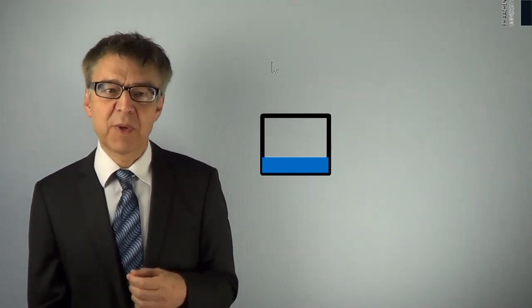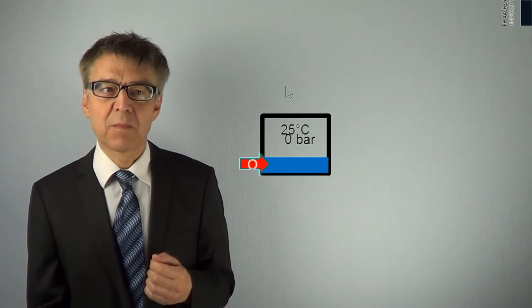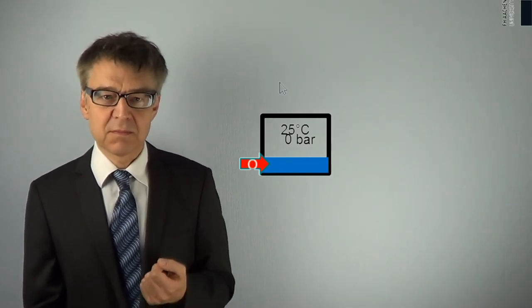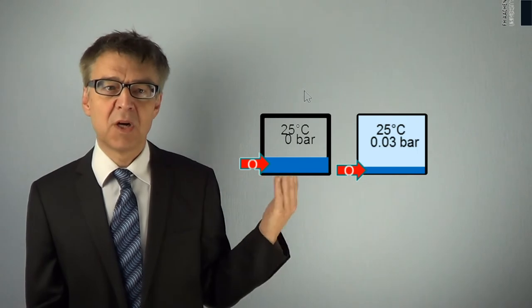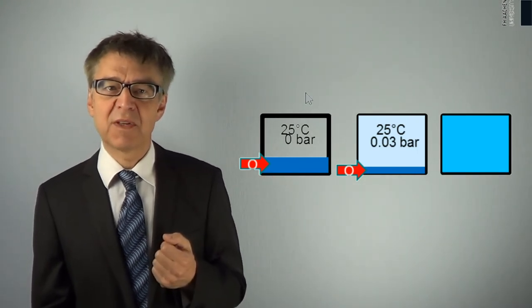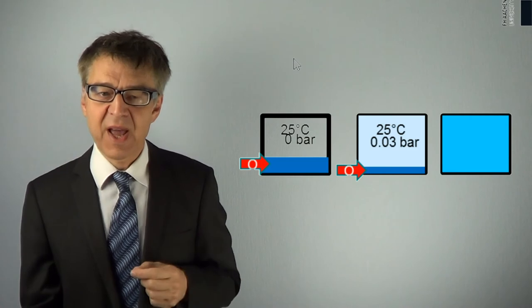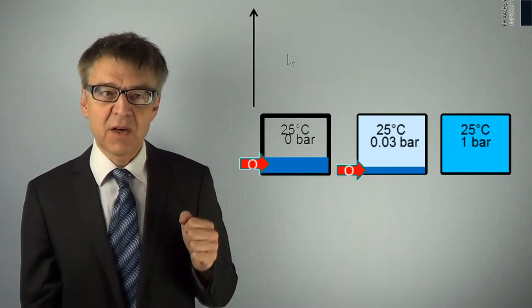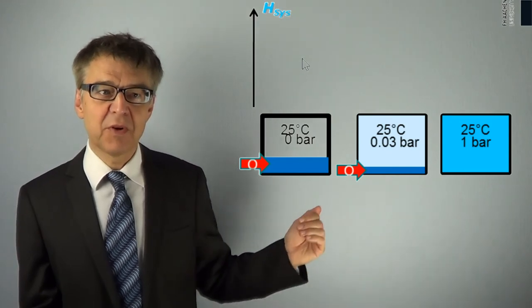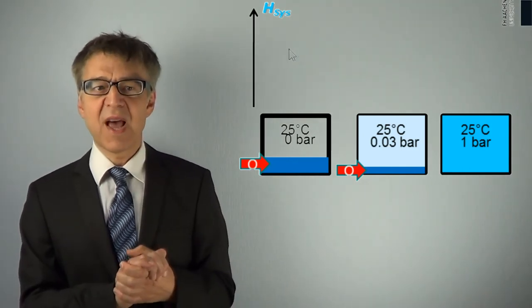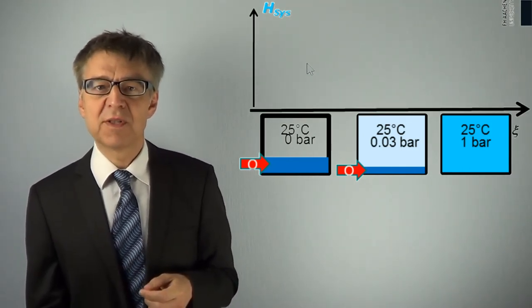An example which we have already discussed is the Carnot engine. Another example is the evaporation of water at 25 degrees Celsius. Initial state: liquid water at 25 degrees Celsius. Final state: only gaseous water vapor at 25 degrees Celsius and one bar. Looking through our energy glasses, we see the following enthalpy profile. In going from the pure initial state to the pure final state, enthalpy increases. The enthalpy increase in this endothermic process is 44 kilojoules per mole.